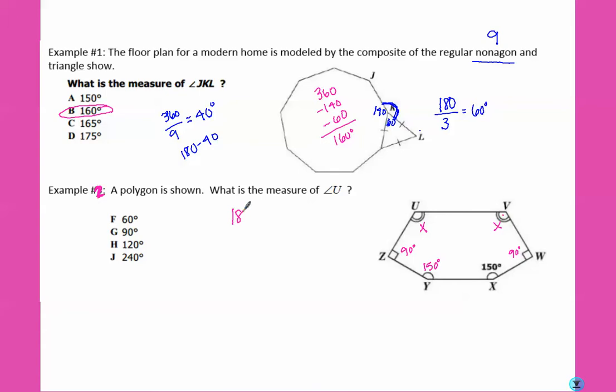So to find the total, we know we have to do 180 times 6 minus 2, which gives us 720 degrees. So I'm going to subtract the 90, 150, 150, and 90. And that leaves me with 240 degrees between these two angles. So then I'm going to divide it by 2, and each one would be 120 degrees. So that's polygons.